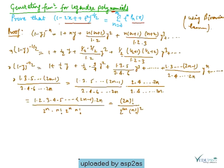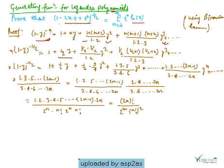Proof: (1 - y)^(-n) equals 1 + ny + n(n+1)/(1·2) · y² + ... This uses the binomial expansion. Now in this expansion we replace n with 1/2, so (1 - y)^(-1/2) expansion becomes 1 + (1/2)y + (1/2)(3/2)/... and wherever n appears we replace it with 1/2, and we get this equation.